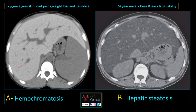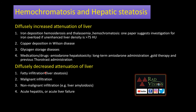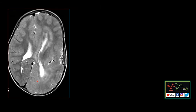Causes of diffuse increased attenuation of the liver include iron deposition in hemosiderosis, hemochromatosis, or thalassemia (unenhanced liver density greater than 75 HU), copper deposition in Wilson's disease, glycogen storage diseases, and medications such as amiodarone, Thorotrast, and gold therapy. Causes of diffuse decreased attenuation include fatty infiltration as seen here, malignant infiltration, non-malignant infiltration, acute hepatitis, and acute liver failure.